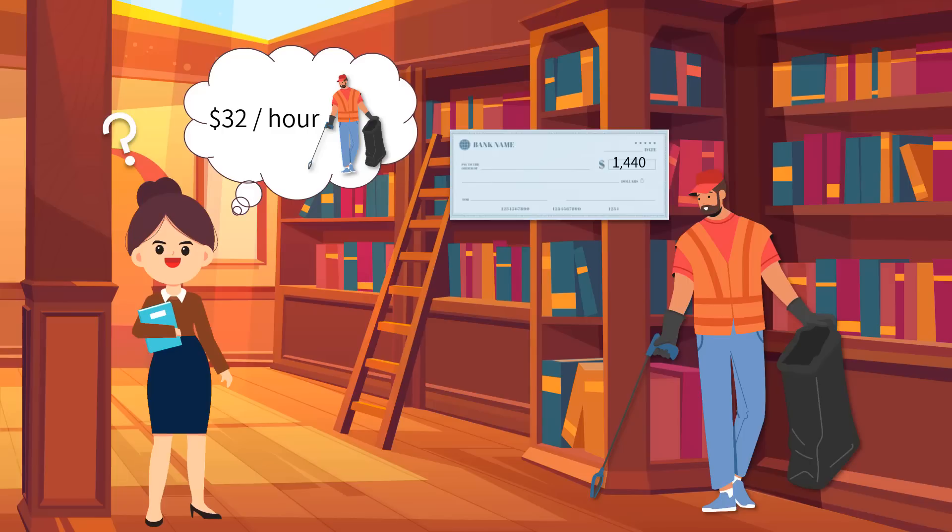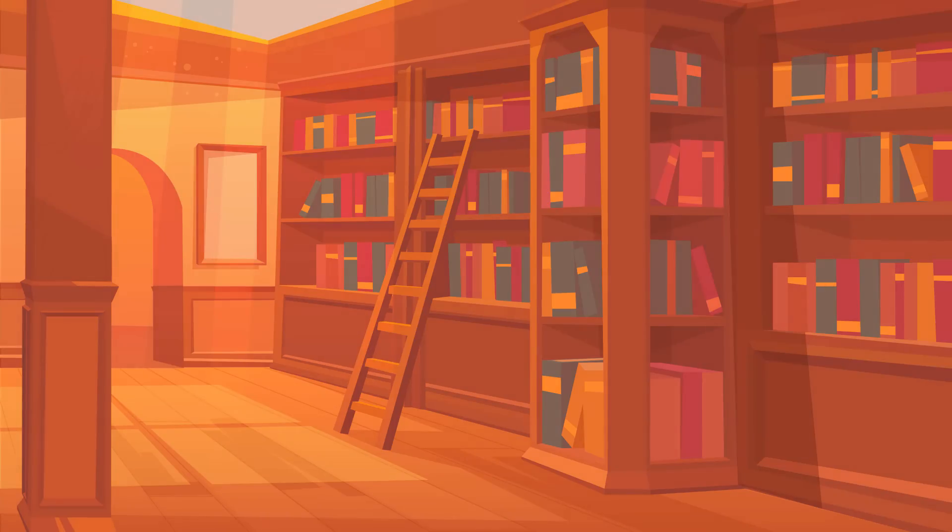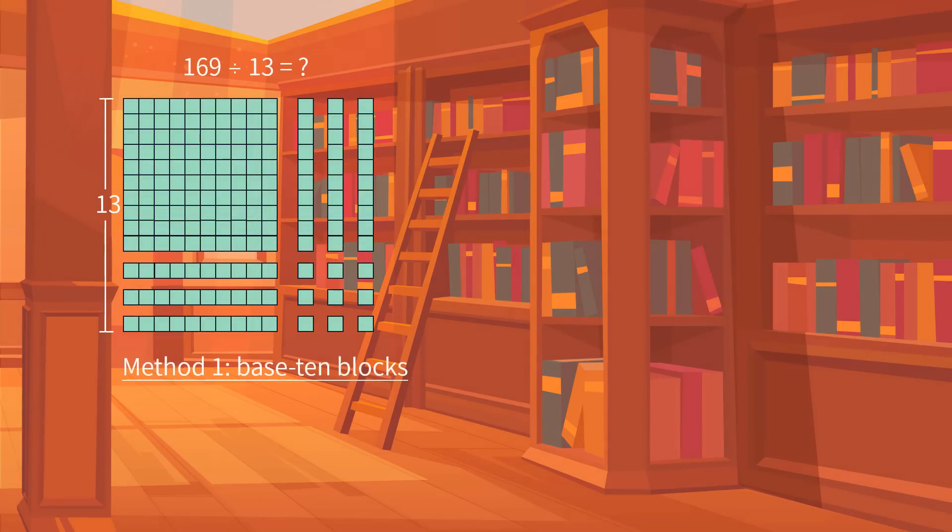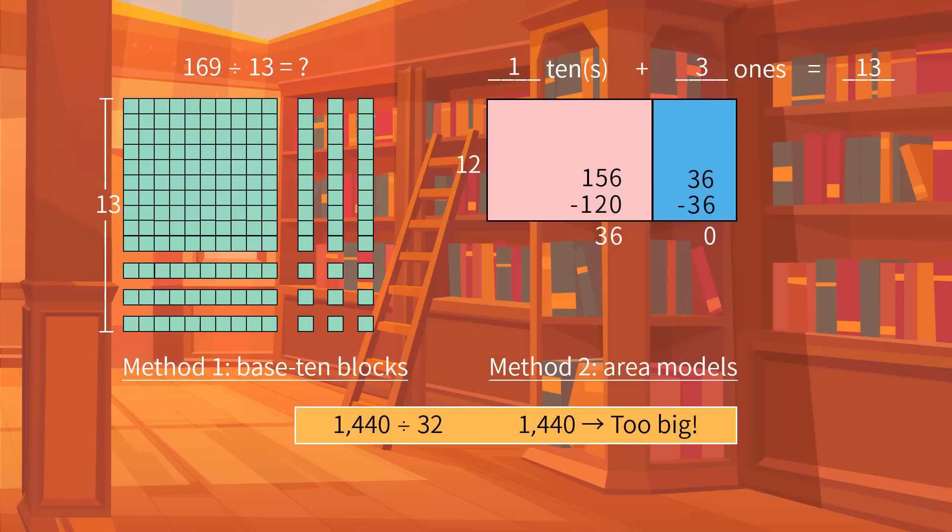We have tried base 10 blocks and area models for division involving two-digit divisors. However, in 1,440 divided by 32, the dividend is getting even bigger, which has brought more difficulty to our calculation. Thus, we need to try a third method, partial quotients.